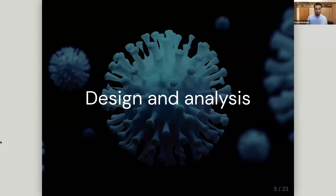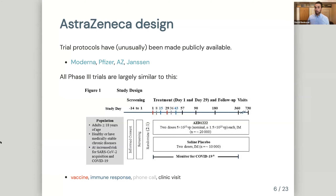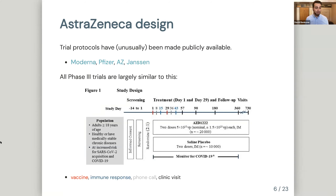Before getting to correlates, let's talk about these trials in general — how we're generating data, what data are generated, and how we approach analysis. This is very high-level. I had one mathematical equation in this talk and I took it out. But this is exactly the kind of thinking statisticians help with: taking scientific questions, translating them into statistical estimates, and providing efficient ways to estimate them from data.